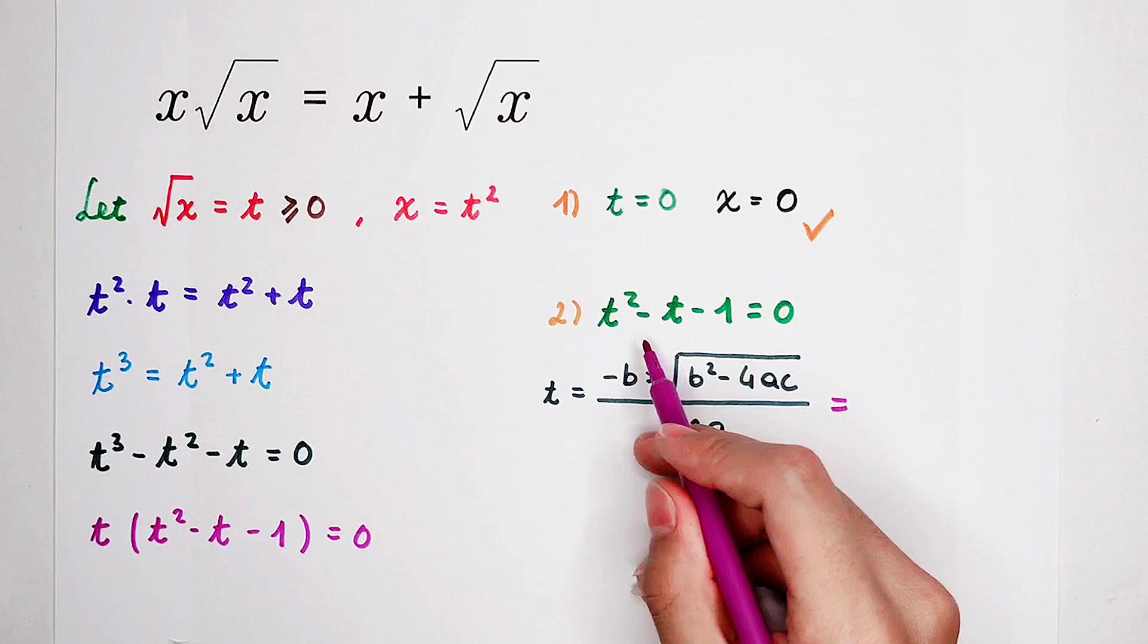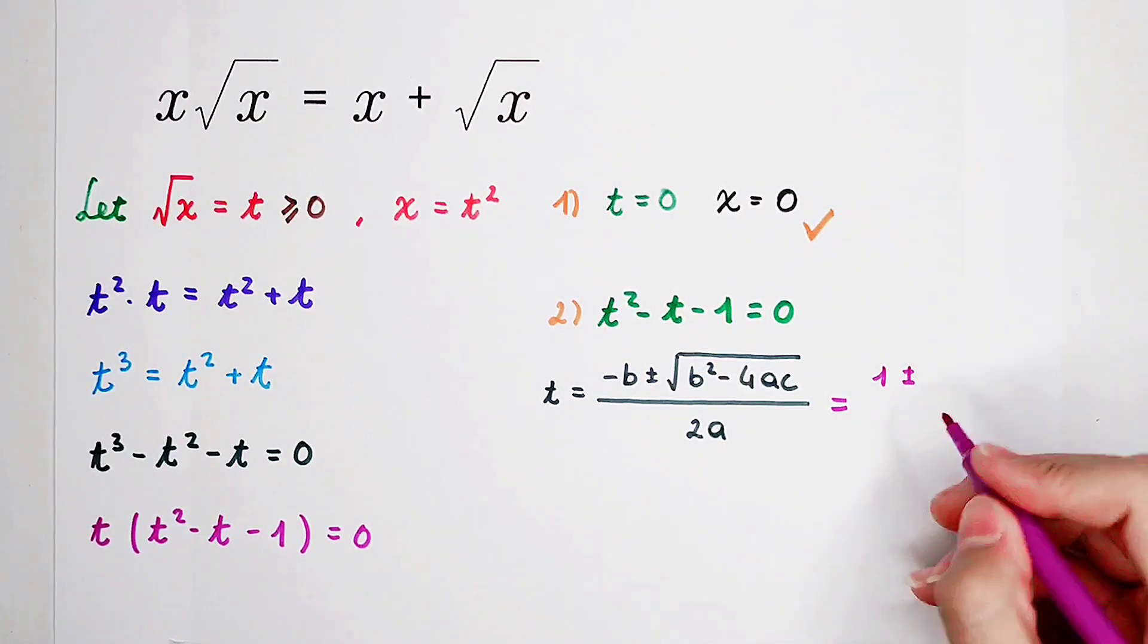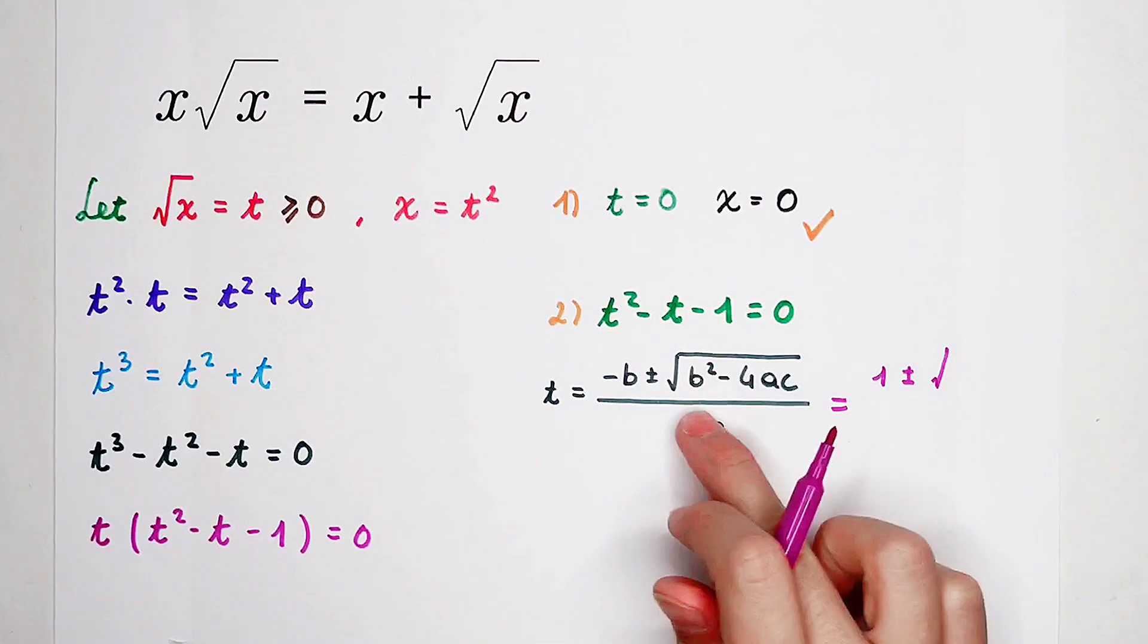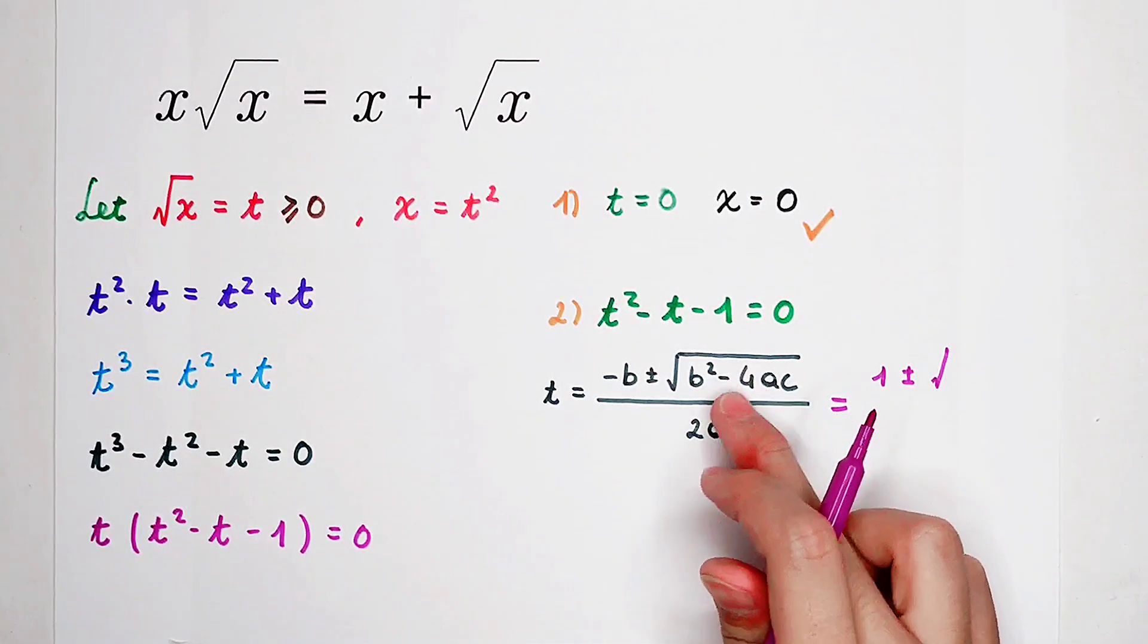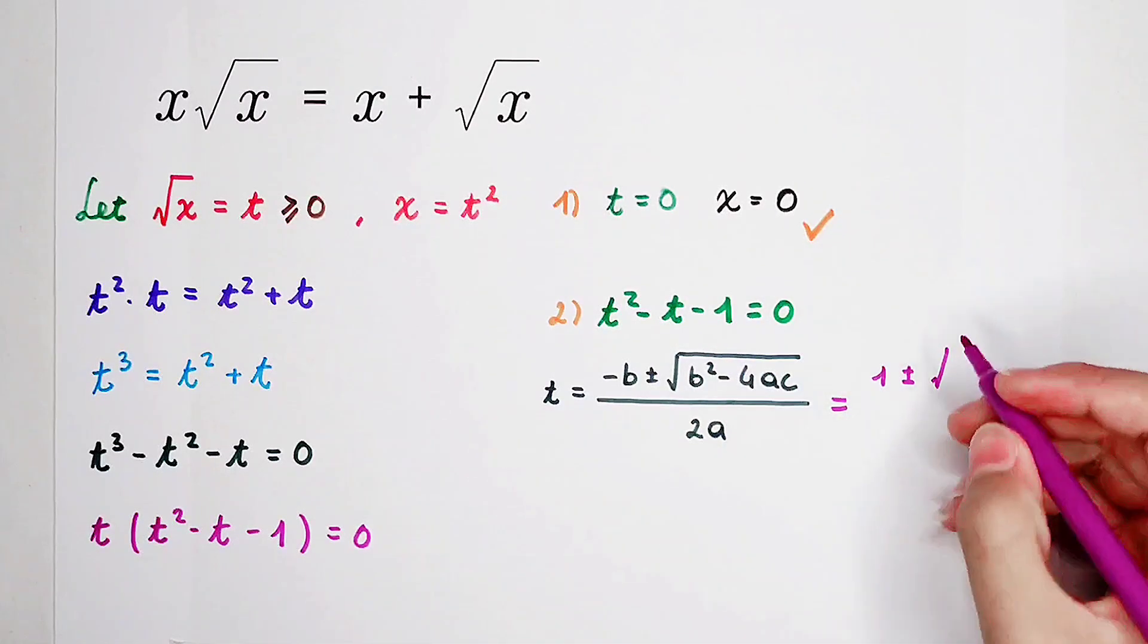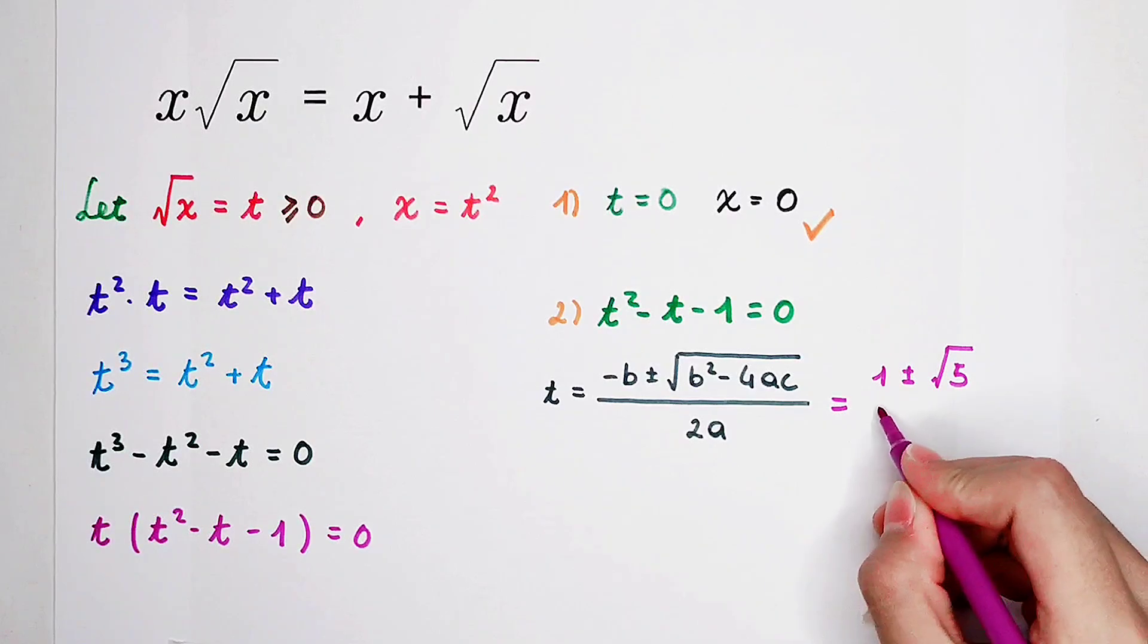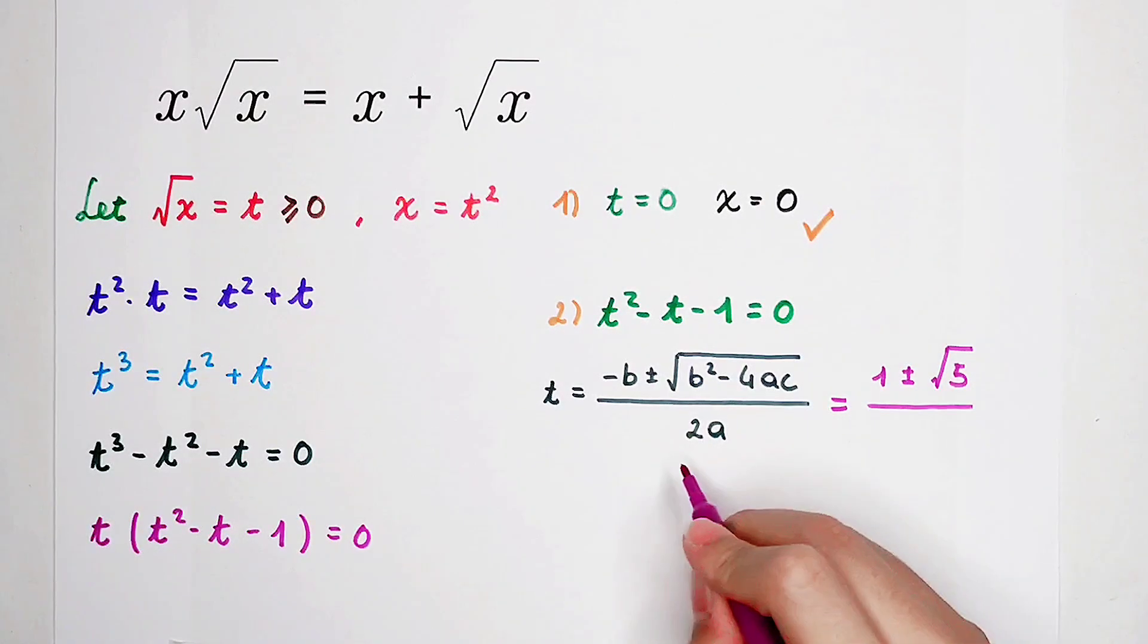Negative b, it is negative. Negative 1, it is 1. Plus or minus square root of negative 1 squared, it is 1. Minus 4 times 1 times negative 1, it is 1 plus 4. It is 5. So, it is 1 plus or minus square root of 5, and then divided by 2 times a is only 2. Since a is equal to 1.